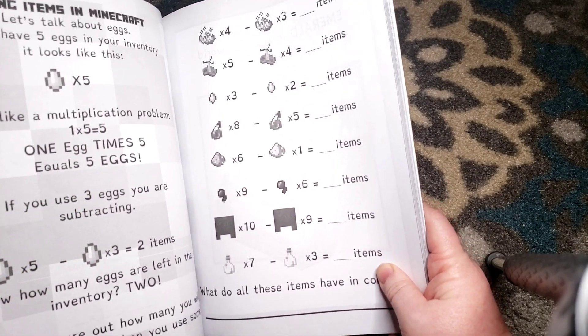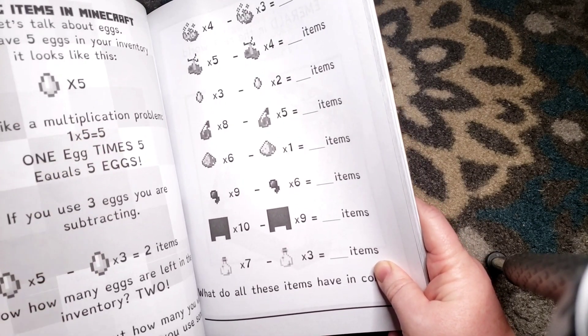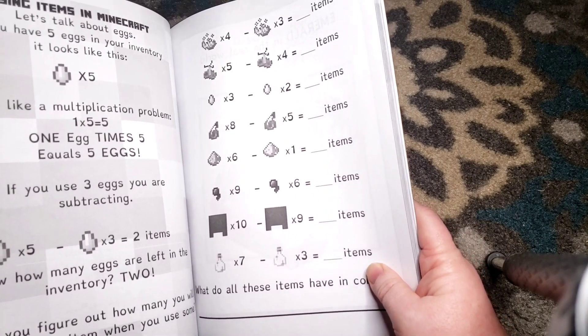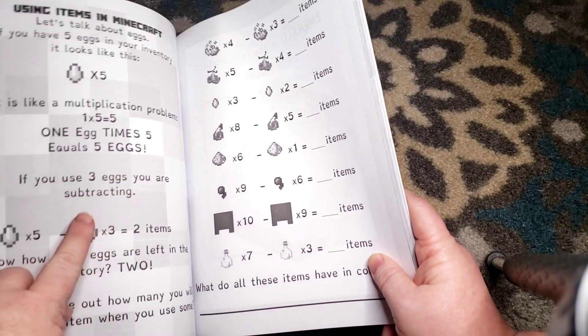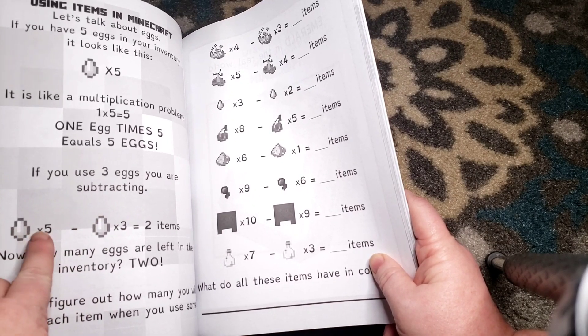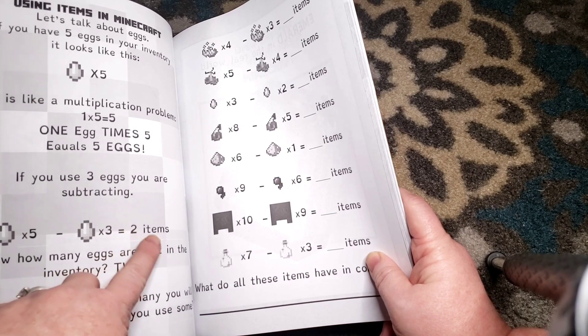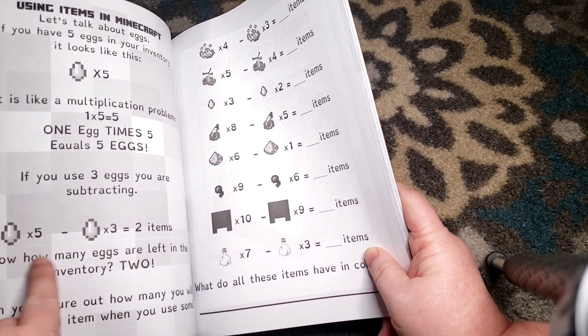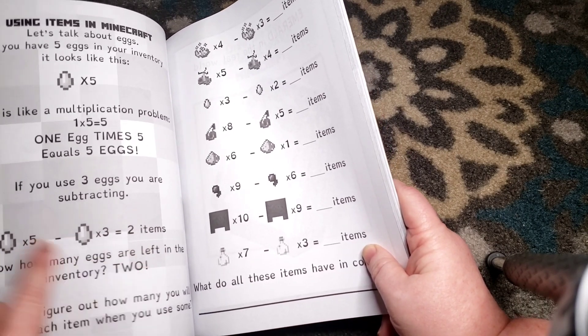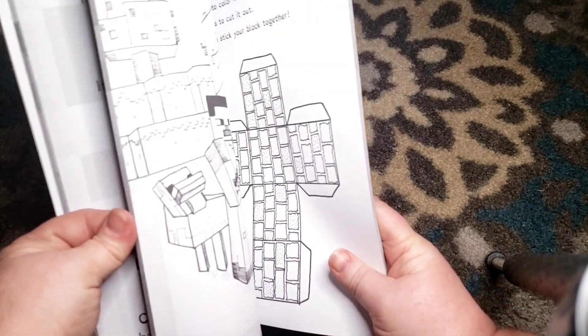If you have five eggs in your inventory, it looks like this: egg times five. It is like a multiplication problem. One times five equals five. One egg times five equals five eggs. If you use three eggs, you are subtracting. So one egg times five minus one egg times three equals two items. So now how many eggs are left in the inventory? Two. It just gives them different ways that they can apply math.